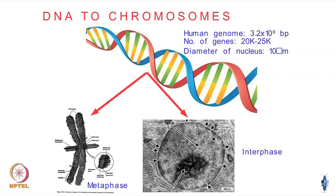Let us start. The human genome contains around 3 × 10^9 base pairs, and the number of genes in there is around 20,000 to 25,000.